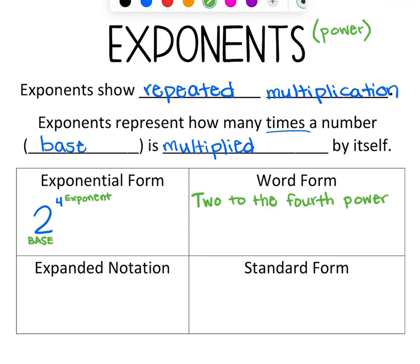And then when we actually go to solve an exponent, we take that base and we multiply it by itself. So we're going to write the 2, and I'm going to write it 4 times. So we take the base and we write it this many times. So 2, 2, 2, 2.